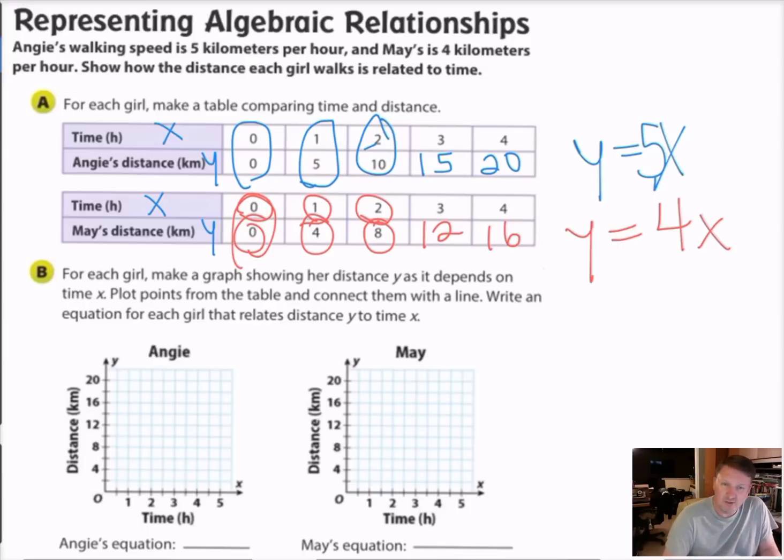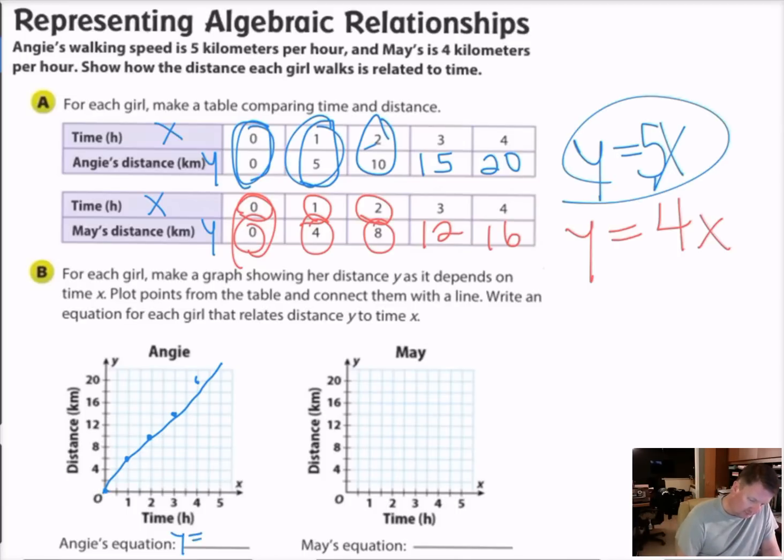So now we can take all these numbers and we can graph them. So let's go back to blue for Angie. Our first point is going to be down here at 0, 0 because that's what this is. My next one is 1, 5. So I go over to 1 and up to 5. And there's my point. And then I go over to 2 and up to 10, which is right here. Over to 3, up to 15, which is right here. Over to 4 and up to 20, which is right here. And then I draw my line. And that's my line. So her equation, we already drew over here, Y equals 5 times whatever X is.